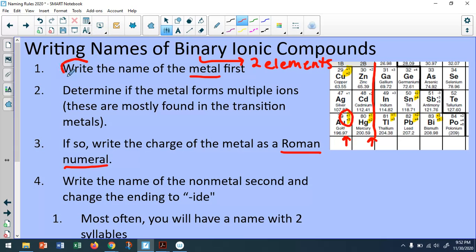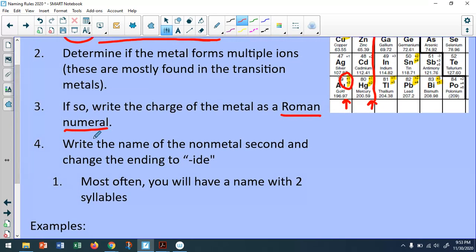So write the name of the metal first. Once we determine if it forms multiple ions, we will write the charge of the metal as a Roman numeral. And lastly, we write the name of the non-metal second and we change the ending to -ide. As a rough rule of thumb, when you're changing that ending, the final name of the non-metal should have two syllables.